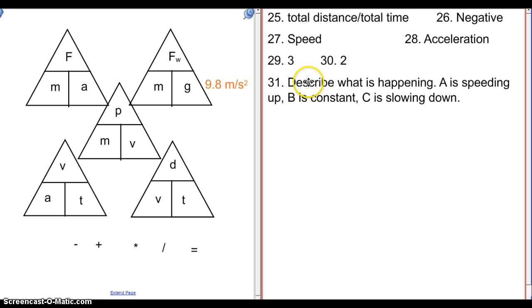For number 31, remember to describe what is happening. This is a speed versus time graph. It actually appears on the next page, so you may have used the graph on the current page. It's not a big deal as long as you know how to read both the speed versus time graph that's on the next page and the position versus time graph that's on the current page. For that second graph, A was speeding up, B was constant, and C was slowing down. It's a little bit different with a speed versus time graph.